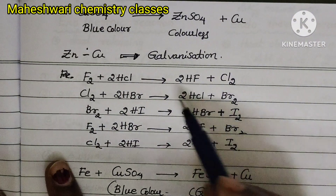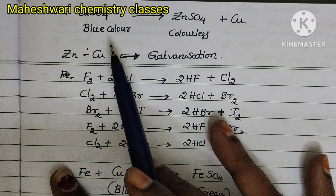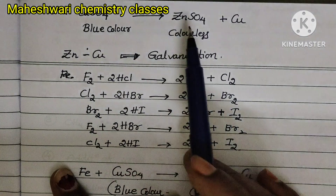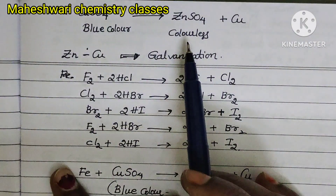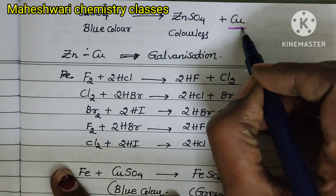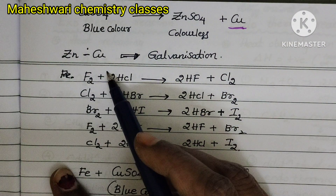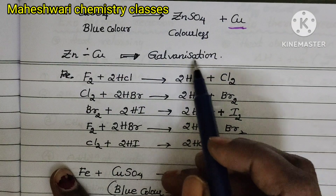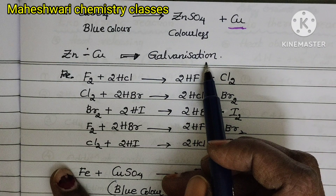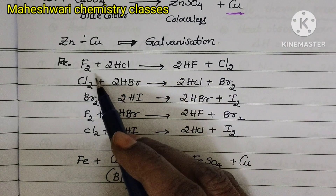Next, zinc reacts with copper sulfate. Copper sulfate is a blue color solution. When it reacts with zinc, it converts to colorless zinc sulfate and copper is deposited. The zinc-copper combination is called galvanization. Next, fluorine reacts with hydrochloric acid and gives hydrogen fluoride and chlorine gas.